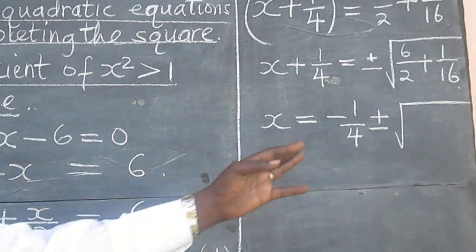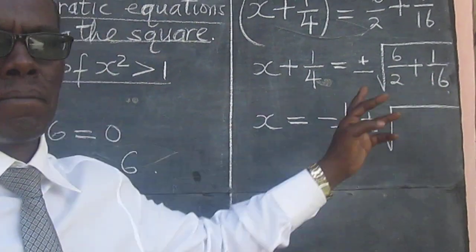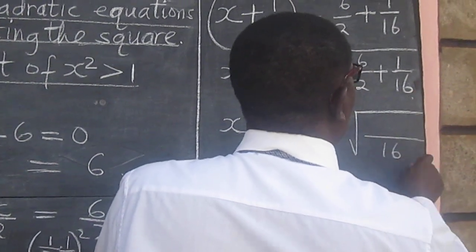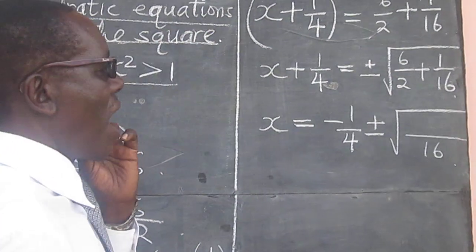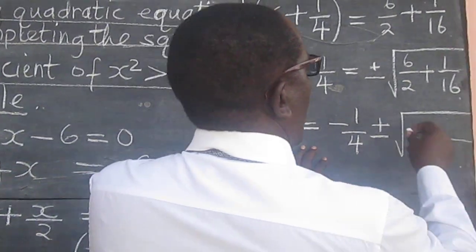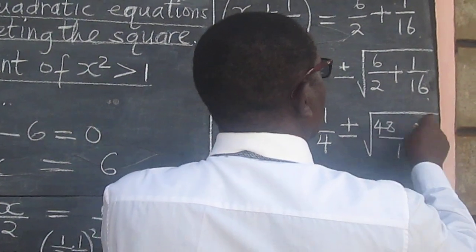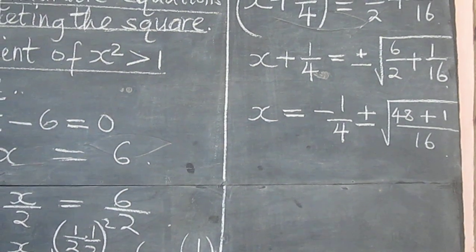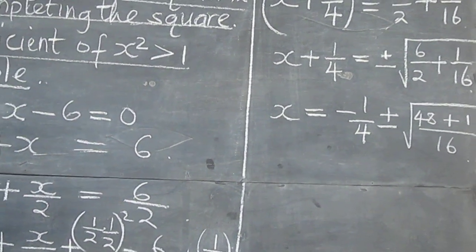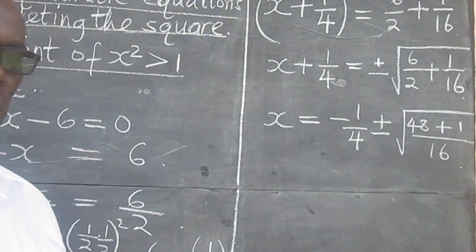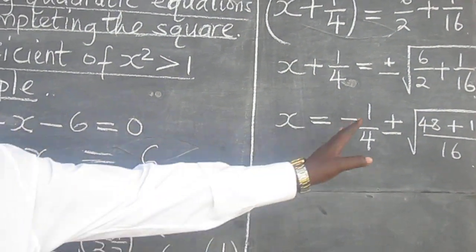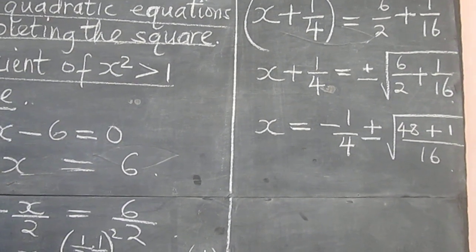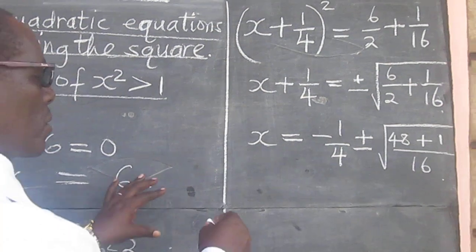And now we need to get the LCM, which in this case is 16. And then we have 48 plus 1. Looks like we are almost through with the question because from here we can work out the values of x comfortably as follows.